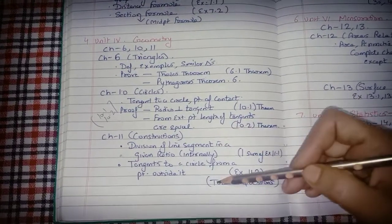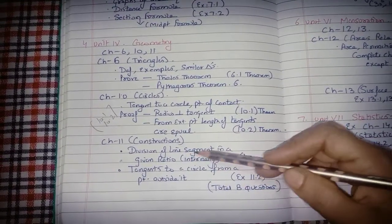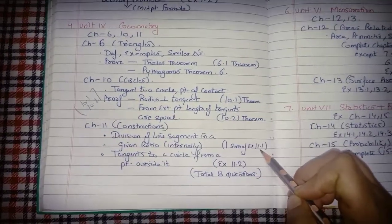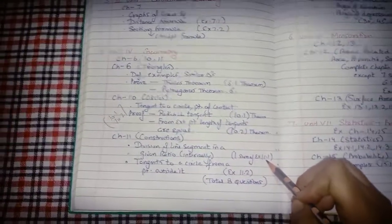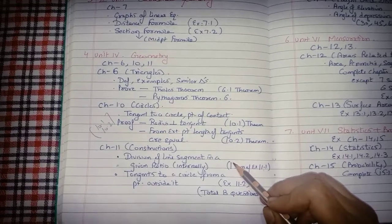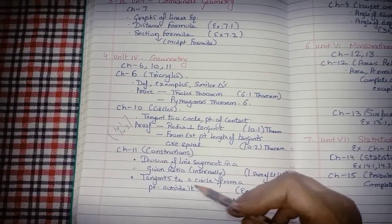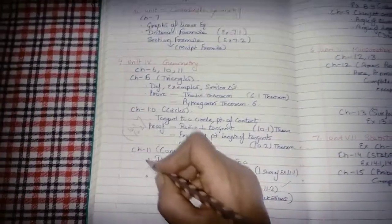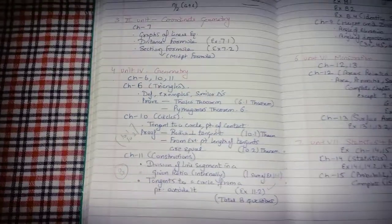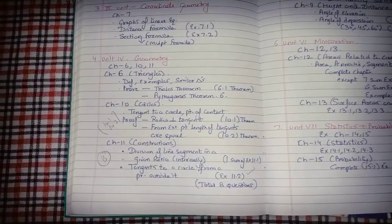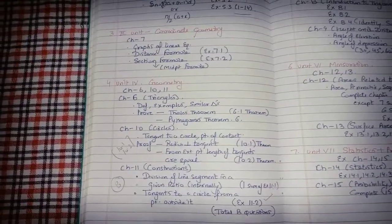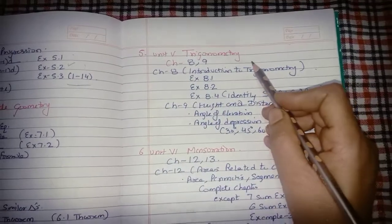For Chapter 11, Constructions: from exercise 11.1 on division of a line segment in a given ratio internally, prepare only the first question out of the 7 total questions; the other 6 are cut. For exercise 11.2 on drawing tangent to a circle from a point outside it, prepare the complete exercise. So total 8 questions to prepare from this chapter - all of 11.2 and only question 1 from 11.1.